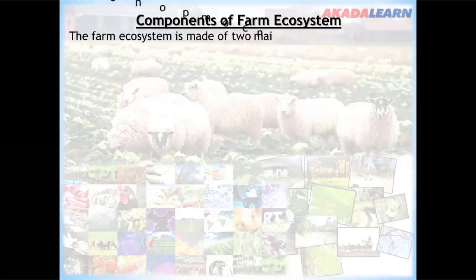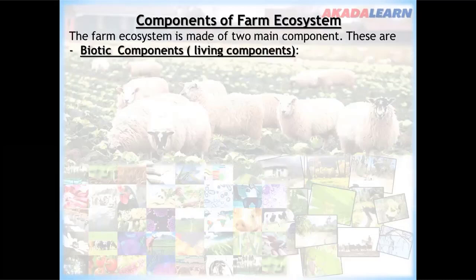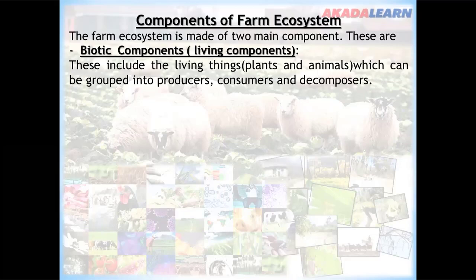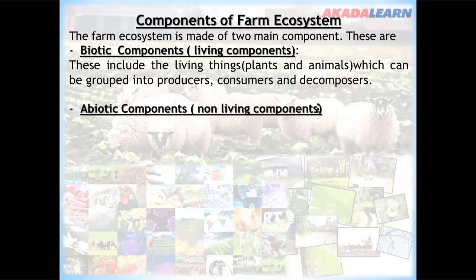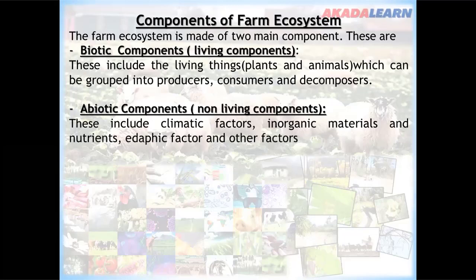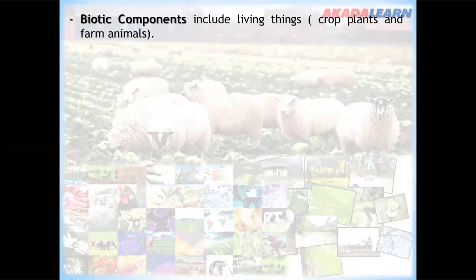The farm ecosystem is made of two main components. The biotic components, or living components, include living things — plants and animals — which can be grouped into producers, consumers, and decomposers. The abiotic components, or non-living components, include climatic factors, inorganic materials and nutrients, edaphic factors, and other factors.